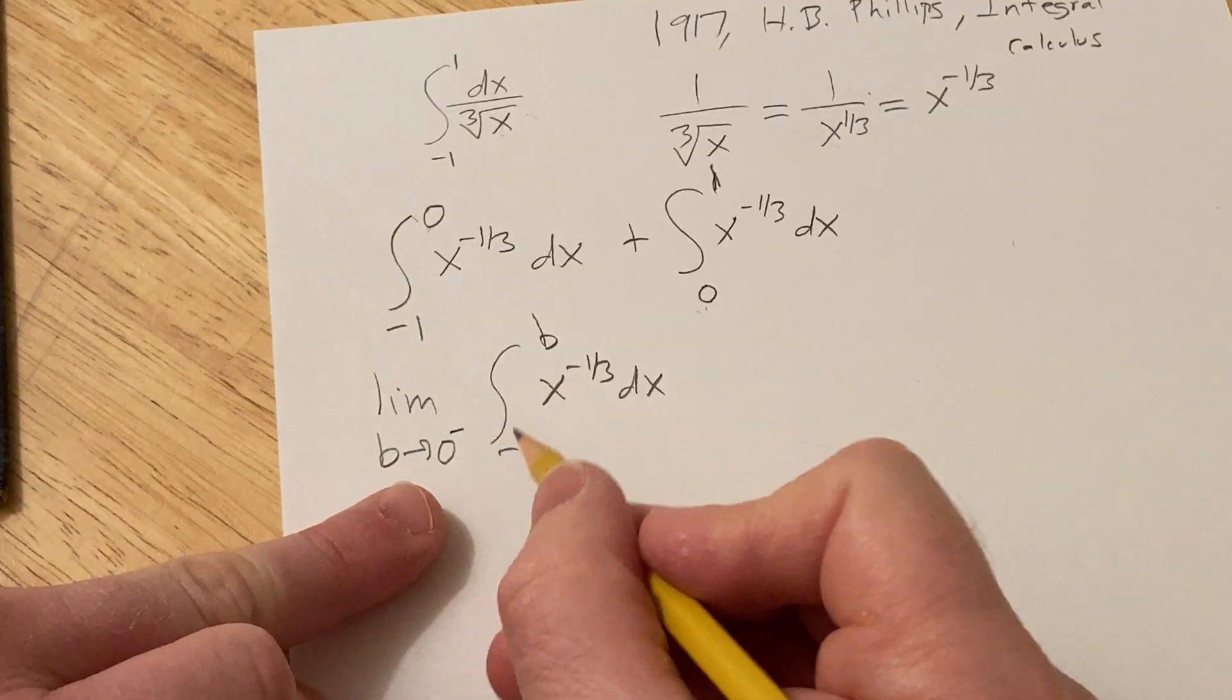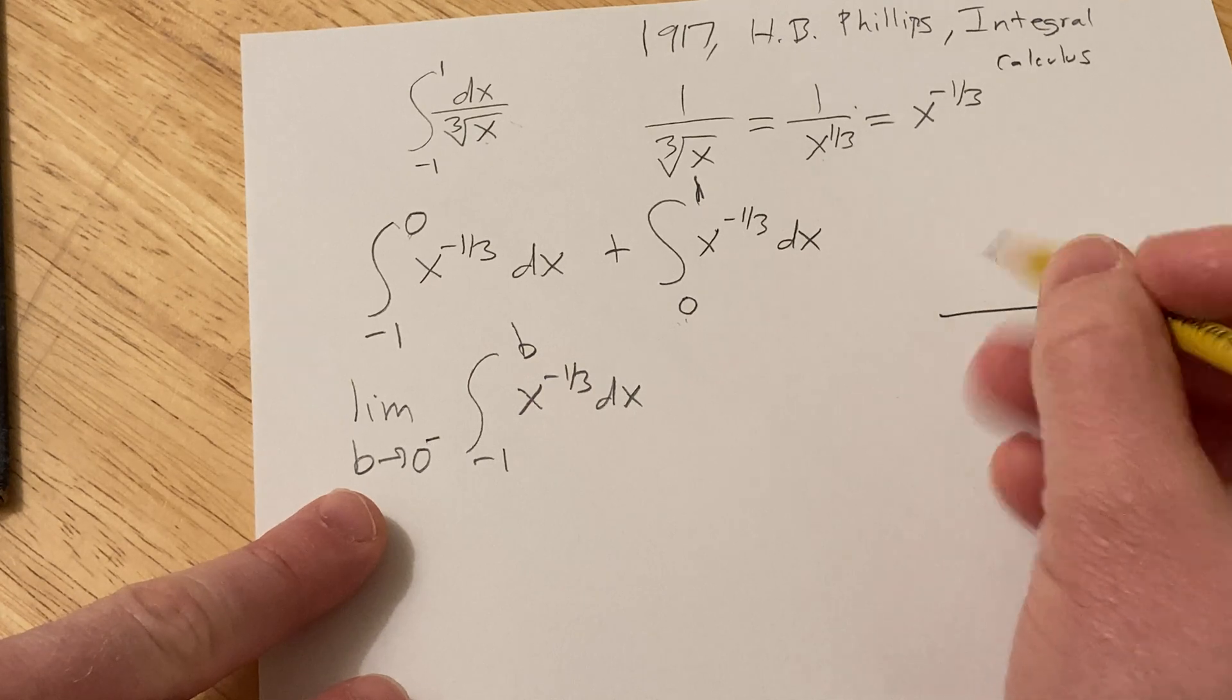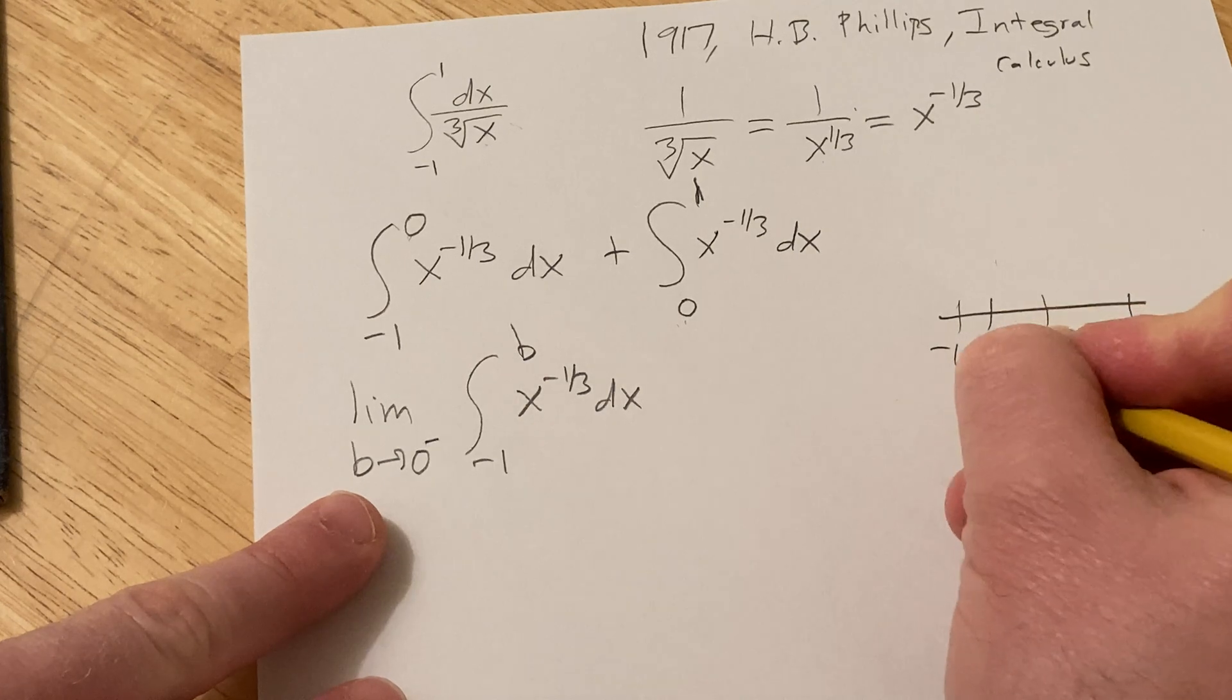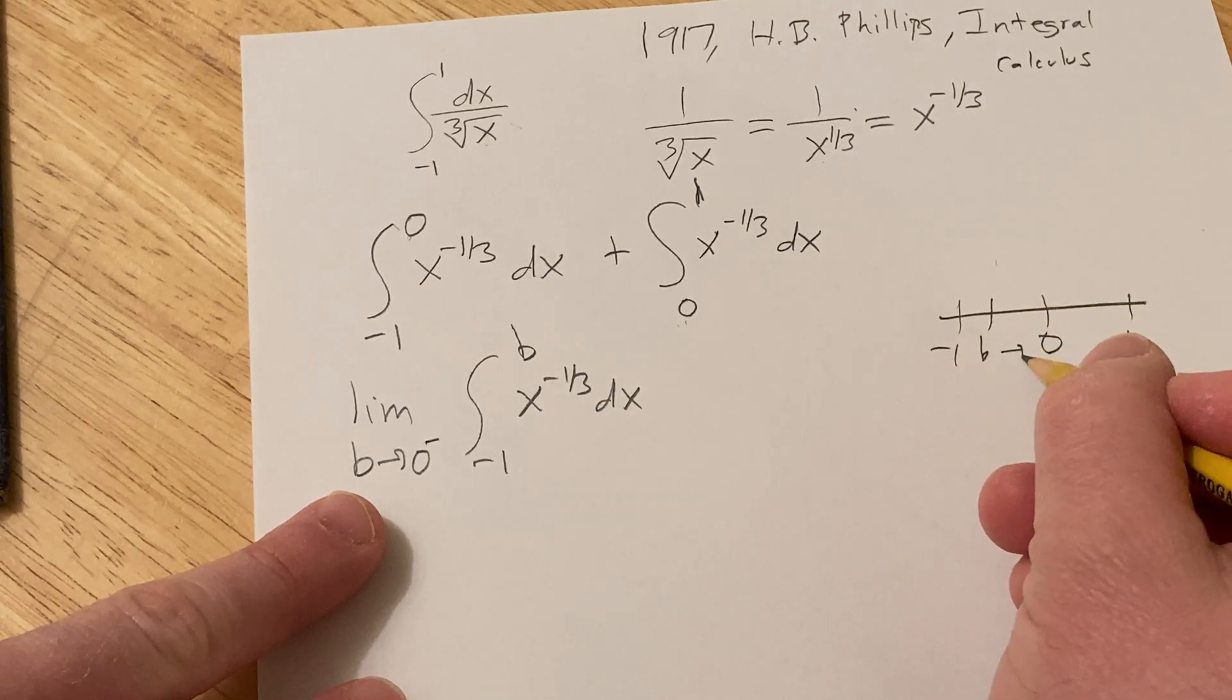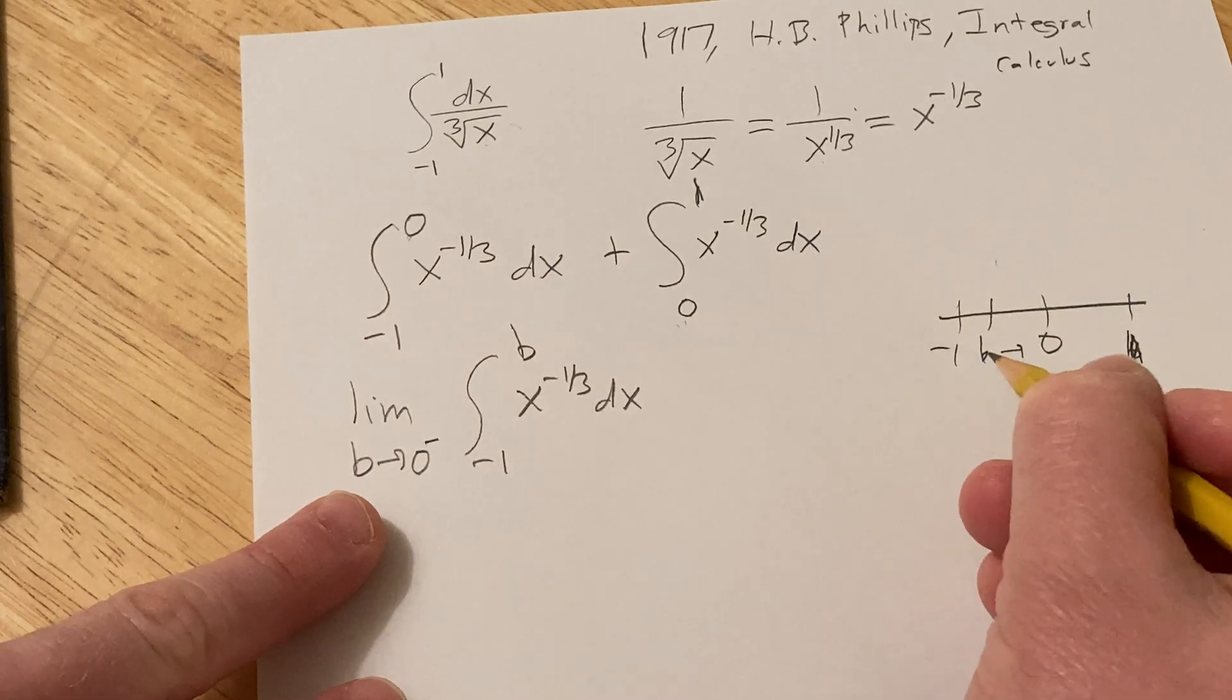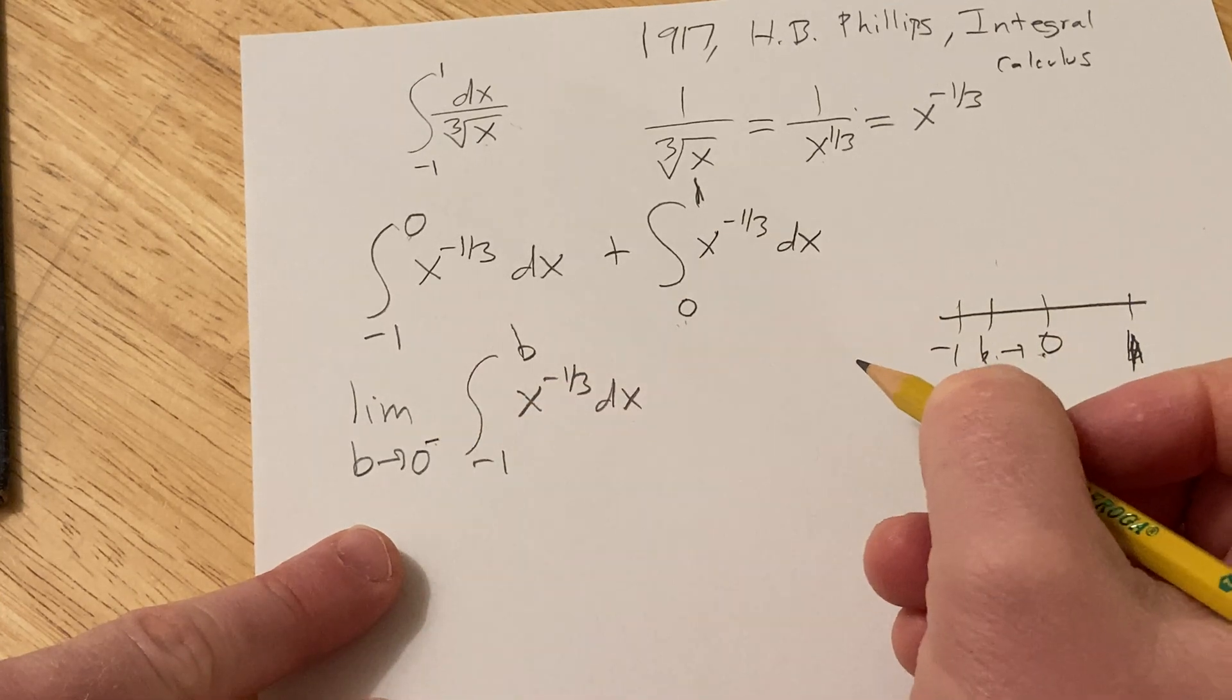The reason this is from the left is if you draw a picture: here's zero, here's negative one, here's one. Here's b, so b is approaching zero because b is between negative one and zero, that's why I put it there on the picture. So it's approaching zero from the left, because it's on the left. That's what the minus sign indicates.